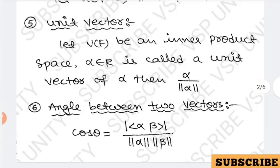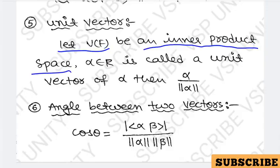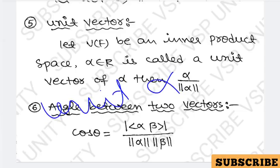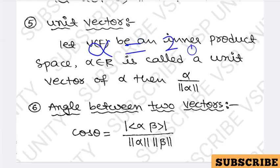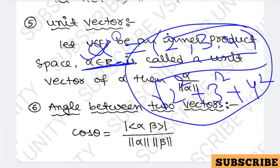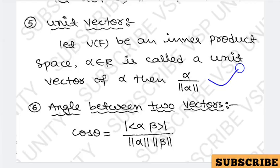Definition of unit vector: let V over F be an inner product space. Alpha is called a unit vector if alpha divided by norm(alpha) equals 1. To find the unit vector of alpha, we just compute alpha divided by norm(alpha). For example, if alpha equals (2, 3, 4), we divide by sqrt(4 + 9 + 16). That is the unit vector of alpha.